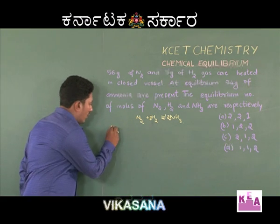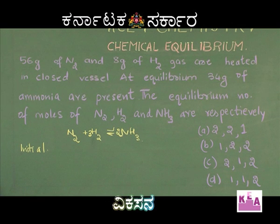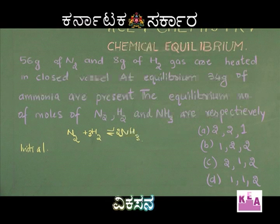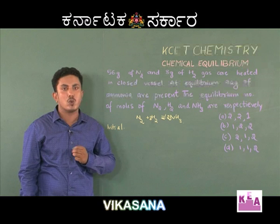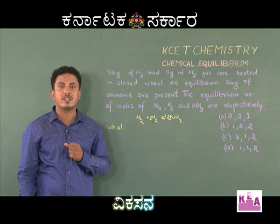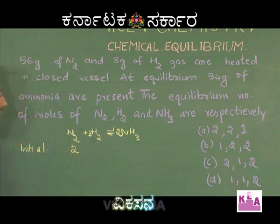I will write the initial number of moles that are taken. In the question, they have given 56 grams of nitrogen. 56 grams of nitrogen should be converted into number of moles using the formula: moles = mass ÷ molar mass. Since the molar mass of nitrogen is 28, 56 ÷ 28 = 2. So the initial number of moles of nitrogen taken is 2.